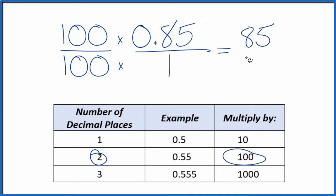100 times 1, that equals 100. And now we have our fraction, 85 over 100. That's the same thing as the decimal 0.85.